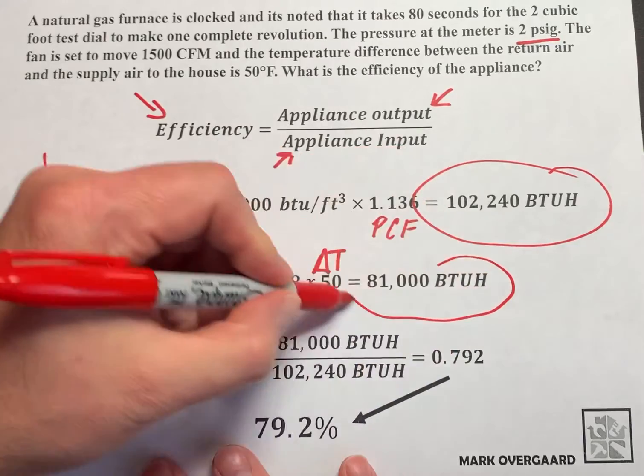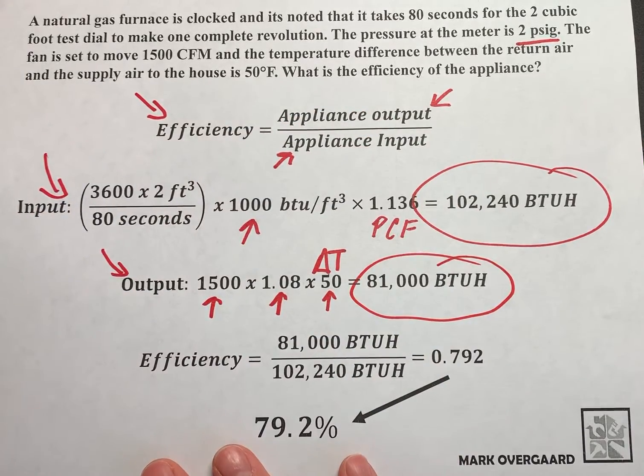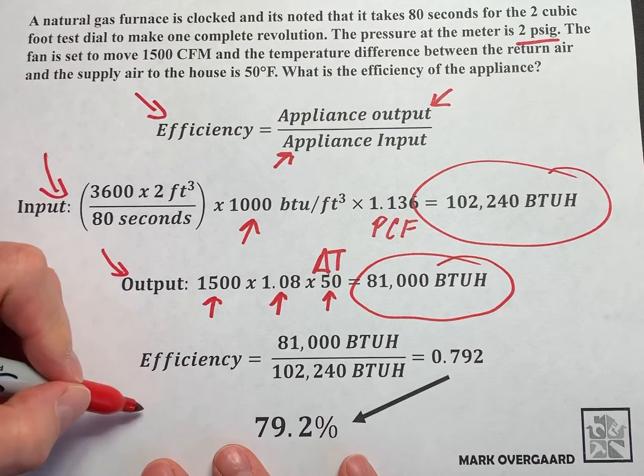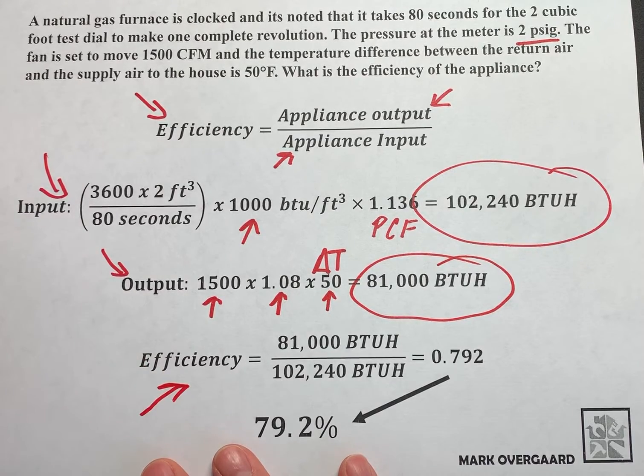What we end up here is 81,000 BTUs. That is our output. That's what we use. Then we can go and find our efficiency.